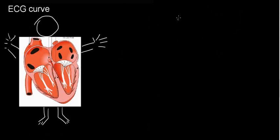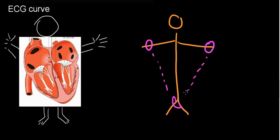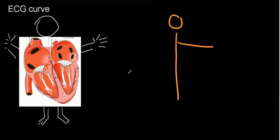Here we have a person who has a heart — as most of us do. What we can do is take an electrode and place it on his left hand, an electrode on his right hand, and take an electrode and place it on his leg. At this point I can visualize some sort of triangle, and then I can measure different currents going from one point to another.